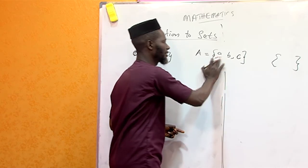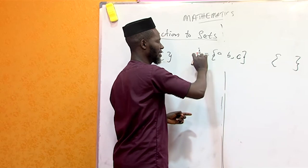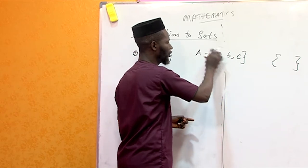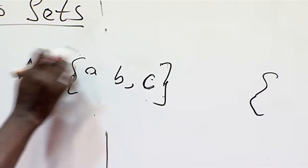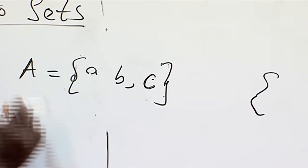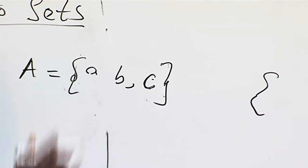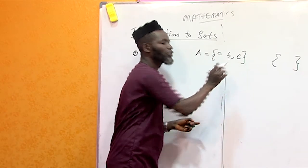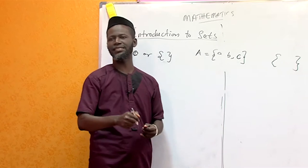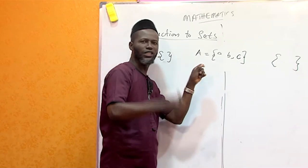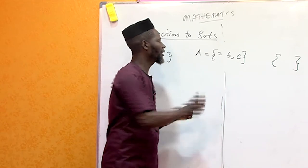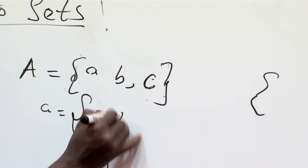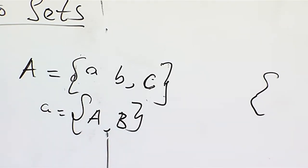So this is a set, and these are the elements of set A. The small letter 'a' belongs to capital letter A. If you want to represent all the elements of a set, you use a small letter to represent the element and a capital letter to represent the set itself. You can't say that 'a' equals set of A, B — no, that is not a set.